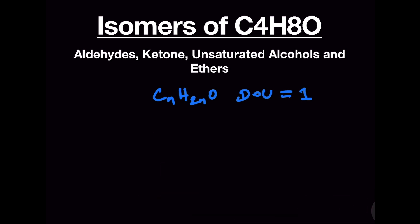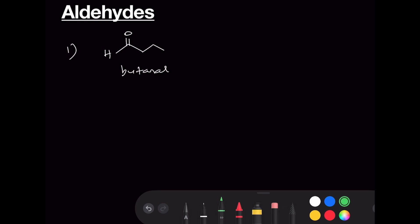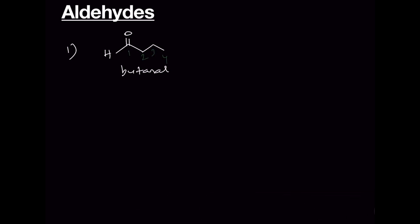Let us do this one by one. Aldehydes: for a four-carbon chain we get butanal. Keep the aldehyde at the end and then make a branching — so this is 2-methylpropanal. These are the two aldehydes that we can write.